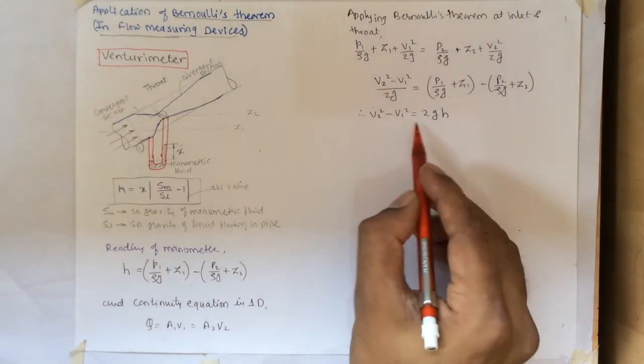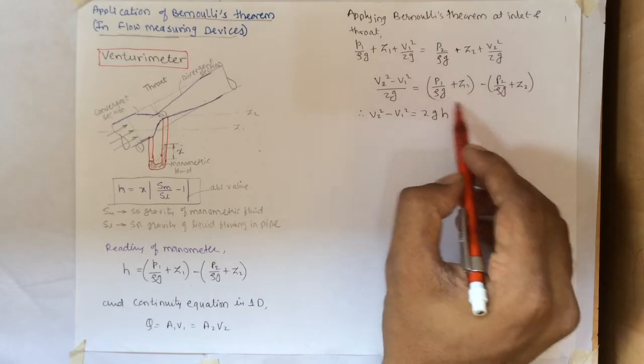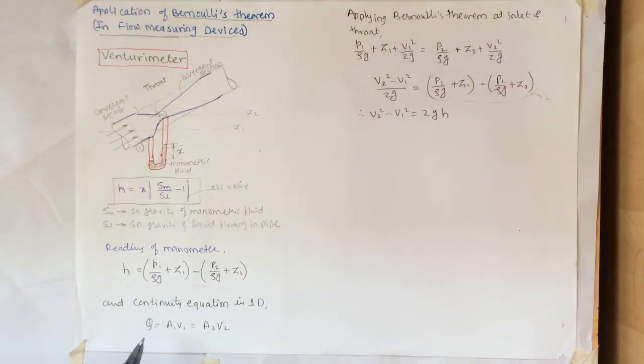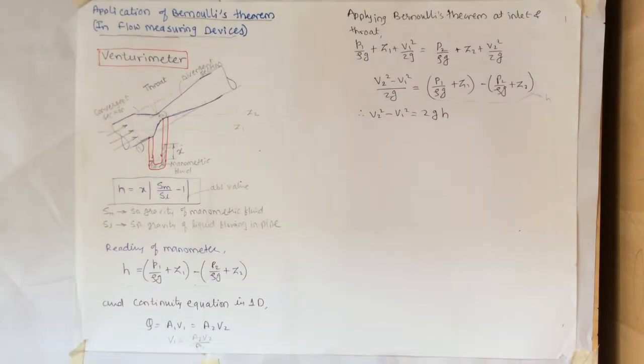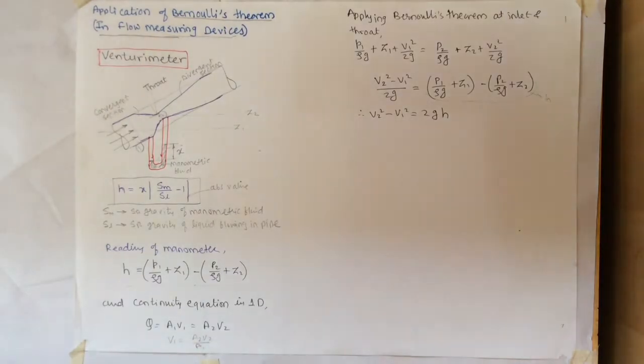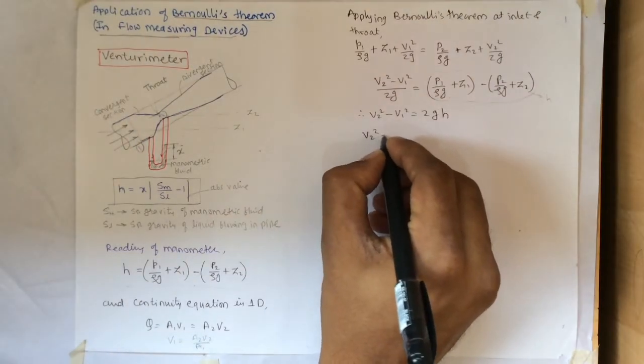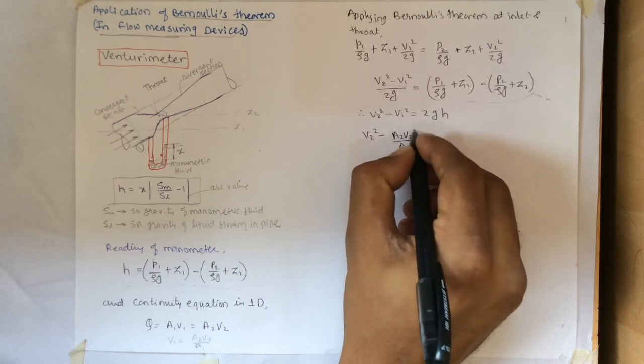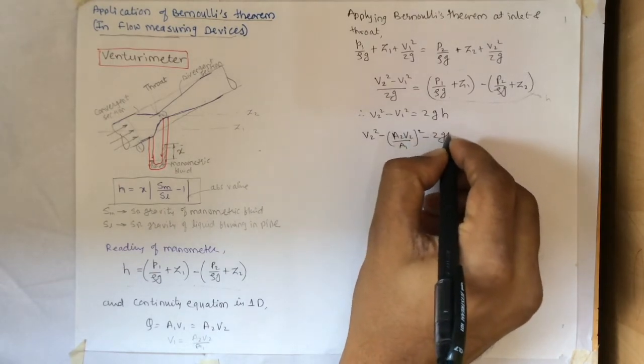As we know that this right hand side of this equation is nothing but H, the reading of manometer. So we can write V2 square minus V1 square equals 2gh. From continuity equation we can write V1 equals A2 V2 by A1. We can put this in this equation. Instead of V1 we write A2 V2 divided by A1, the whole square, equals 2gh.